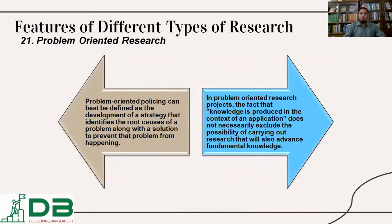Problem-oriented research can be best defined as the development of a strategy that identifies the root causes of a problem, along with the solution to prevent that problem. In problem-oriented research, projects and factual knowledge are produced in the context of an application, and include possibilities of carrying out research that will also advance fundamental knowledge.